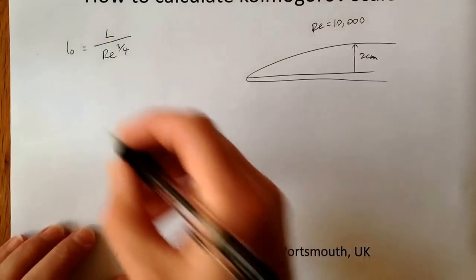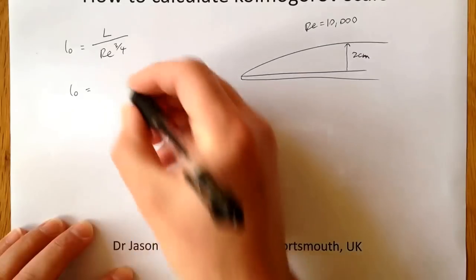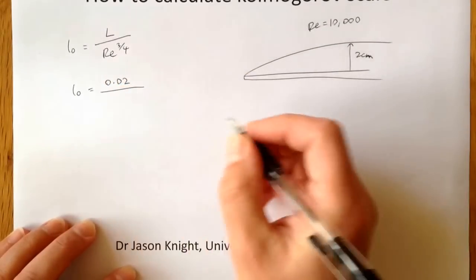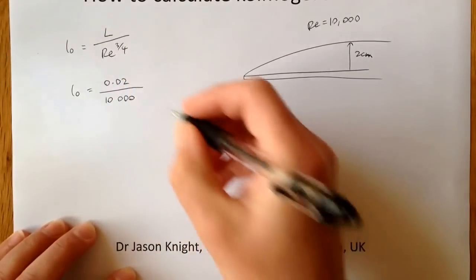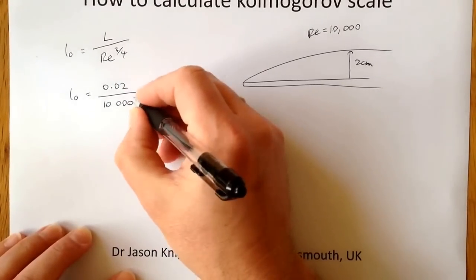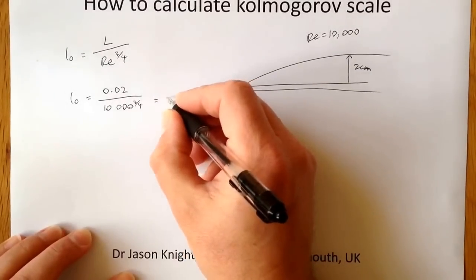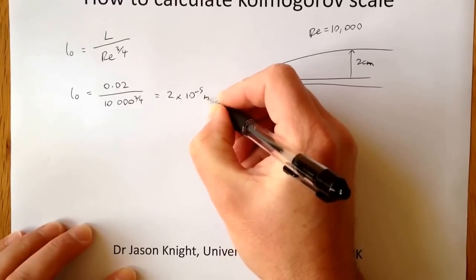In this particular case, we've got the larger length scale which is 2cm, so the Kolmogorov scale becomes 0.02 metres divided by the Reynolds number 10,000 to the power 3 quarters, and that works out to be 2 times 10 to the minus 5 of a metre.